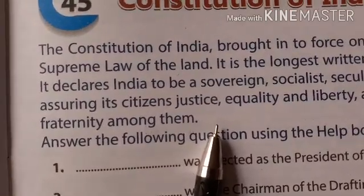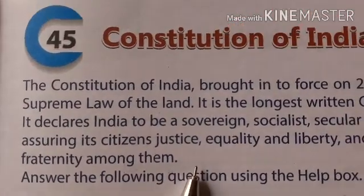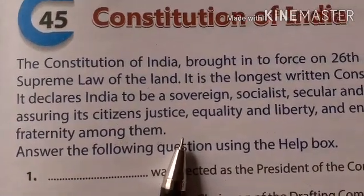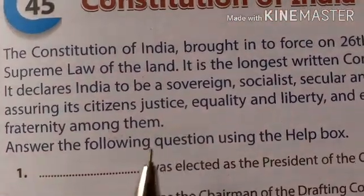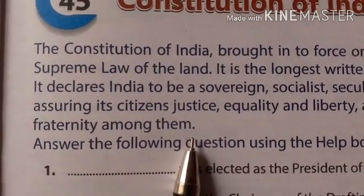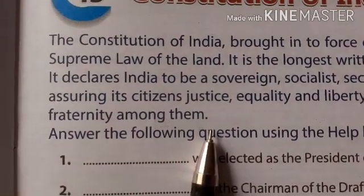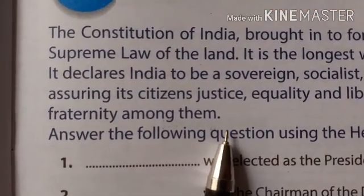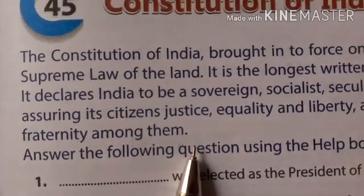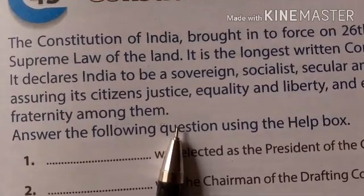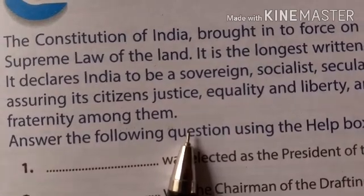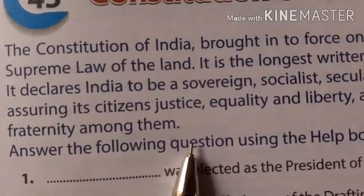There are many sources of the Constitution of India. Sources means from where different features were taken. The first source is the Government of India Act 1935. Then the British Constitution — some things in our constitution are taken from the British Constitution — as well as the US Constitution, Canadian Constitution, and Australian Constitution.